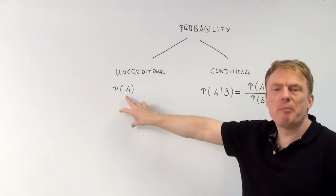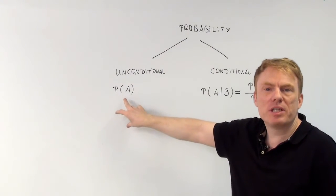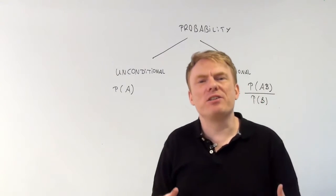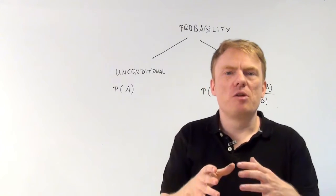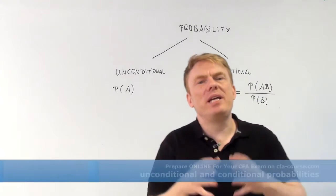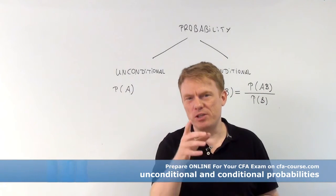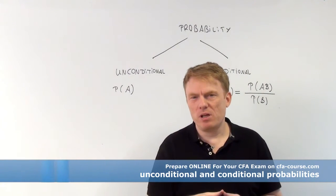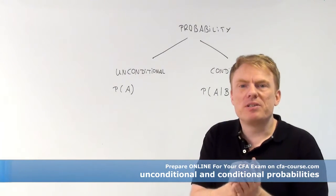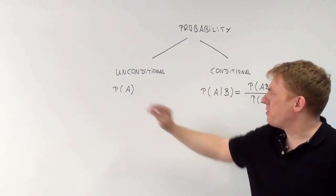The unconditional probability — the probability of a given event A — is just without any condition. For example, the probability that it's going to rain at 12 o'clock. This is an unconditional probability because there is no event having occurred first.